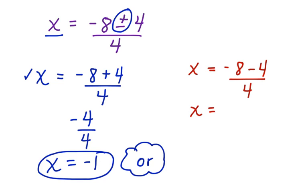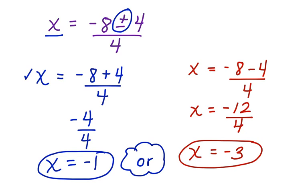x is equal to negative 8 minus 4, which is negative 12, divided by 4. x is equal to negative 3. Here are the two possible solutions for the equation using the quadratic formula.